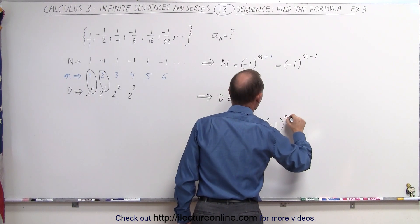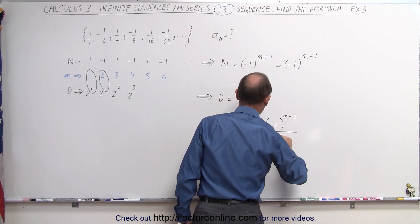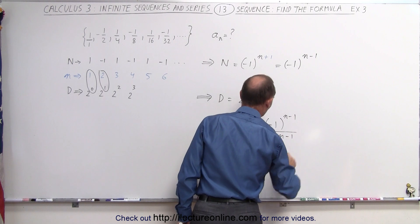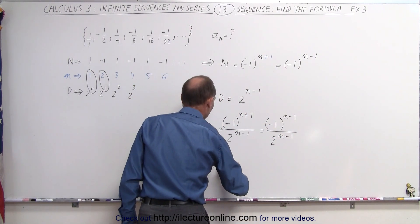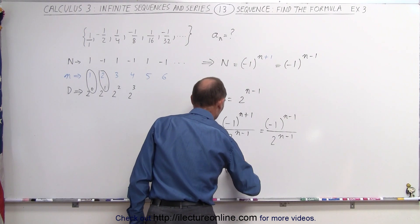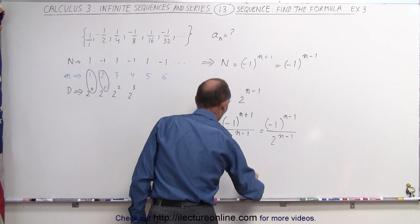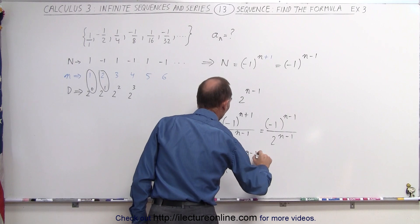which means that this could have been written as minus one raised to the n minus one power, divided by two raised to the n minus one power. And so if you like, you could have written this as well as a sub n is equal to the quantity minus one over two, all of it raised to the n minus one power.